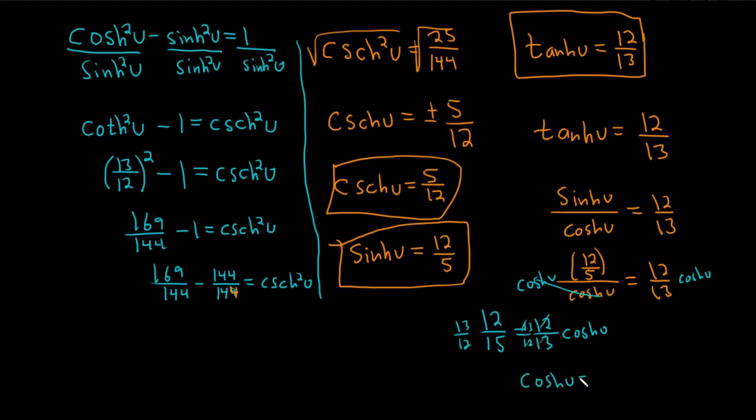Hyperbolic cosine of u or cosh is equal to 13 over 5. Beautiful stuff. And we're almost done, right? We just need the last one which is the reciprocal of the hyperbolic cosine. It's the hyperbolic secant of u. And that would just be 5 over 13. That would be the very last one. So that would be the other five hyperbolic trig functions.